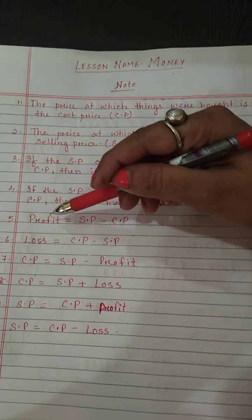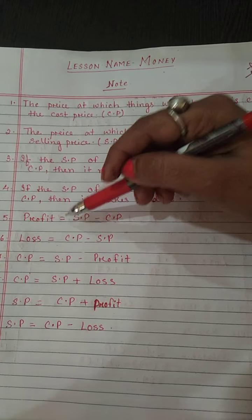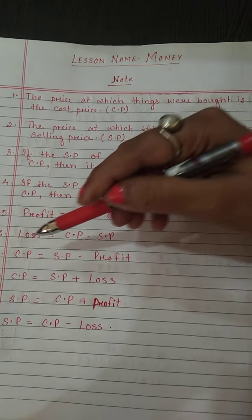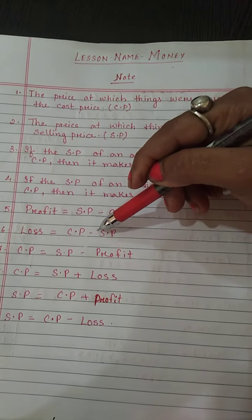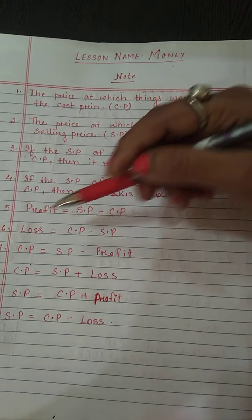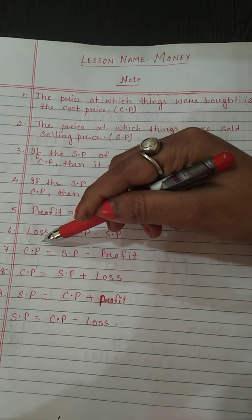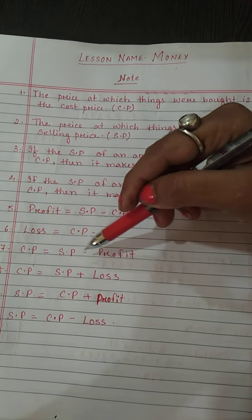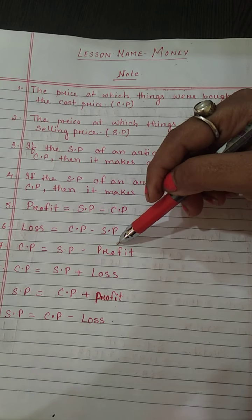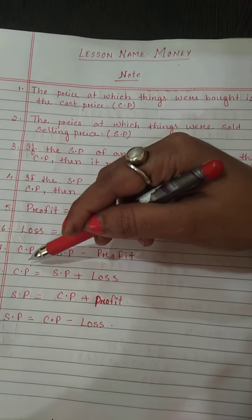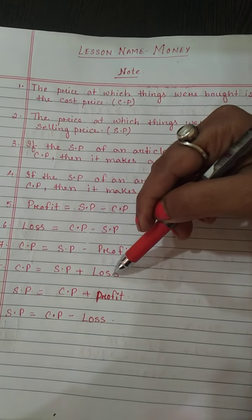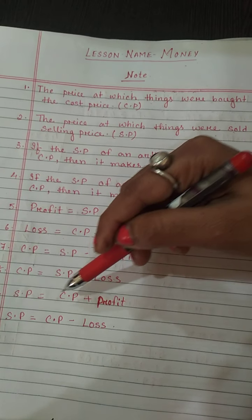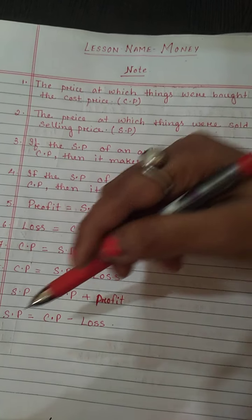Number five point — formulas: Profit = SP minus CP. Loss = CP minus SP. CP = SP minus Profit. CP = SP plus Loss. SP = CP plus Profit. SP = CP minus Loss.